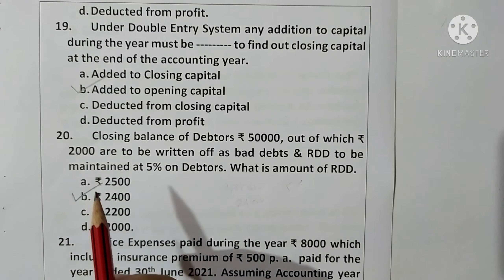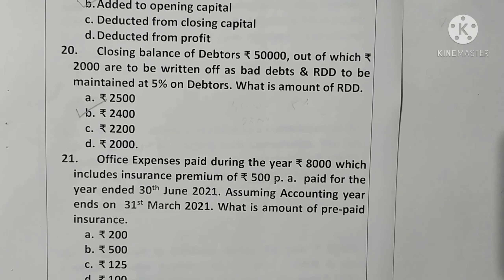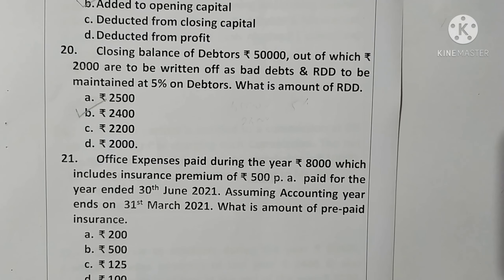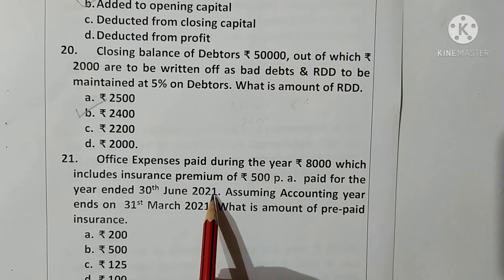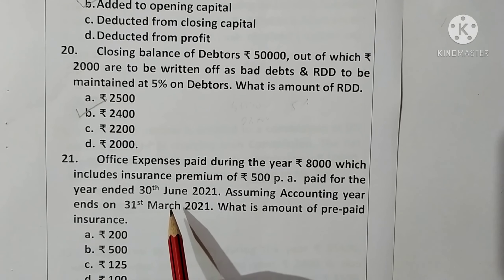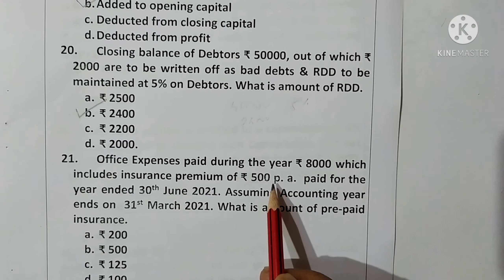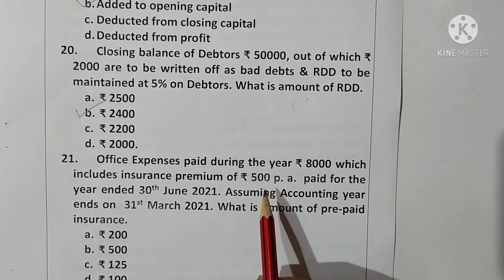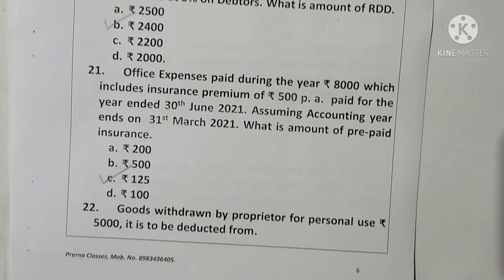Question 21: Office expenses paid during the year are rupees 8,000, which includes insurance of rupees 500 per annum paid up to 30th June 2021. Accounting year ends 31st March 2021, so 3 months is prepaid. Insurance is rupees 500 per year; half is rupees 250 for 6 months; half again is rupees 125 for 3 months of prepaid insurance. Option C is correct.